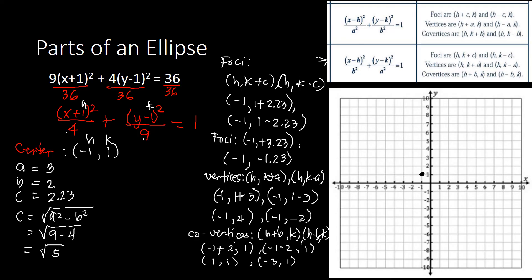Now let's plot the different parts of the ellipse. Foci: (negative 1, 3.23) is here and (negative 1, negative 1.23) is here. Vertices: (negative 1, 4) is here and (negative 1, negative 2) is here. Co-vertices: (1, 1) is here and (negative 3, 1) is here. Tracing the vertices and co-vertices, we draw the ellipse. That is how you find the different parts and draw the graph of an ellipse using our formula.